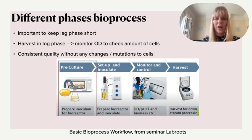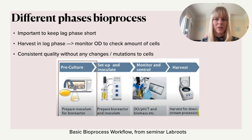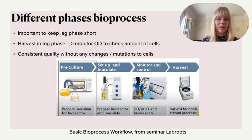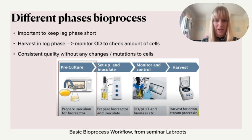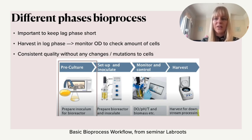Normally you want to harvest somewhere in the log phase. To confirm you're in that phase, you need to check biomass in your reactor. The easiest way is to measure optical density, typically at 600 nanometers. If you have lots of cells — like yeast in water — it will look slightly turbid. This optical density gives an estimate of cell concentration and helps determine what phase you're in. It doesn't directly tell you about cell viability, but you can also monitor dissolved oxygen or carbon dioxide concentrations for additional insight.